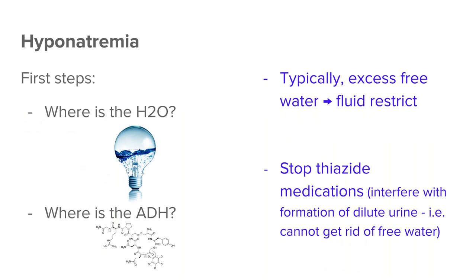When you think about hyponatremia, the two things that have to be present, by and large, are water and antidiuretic hormone — ADH. Your first steps in management are simply to restrict free water; that is, by and large, the safest thing to do and what will work in any scenario. Often, look at their medications to see if something as simple as thiazide medications — which interfere with the formation of dilute urine — might explain it. Thiazide medication does not allow the patient to get rid of that free water proportionate to the amount of salt being removed.